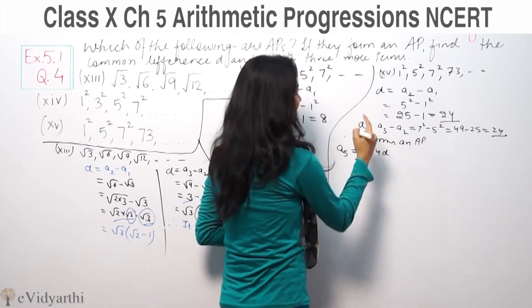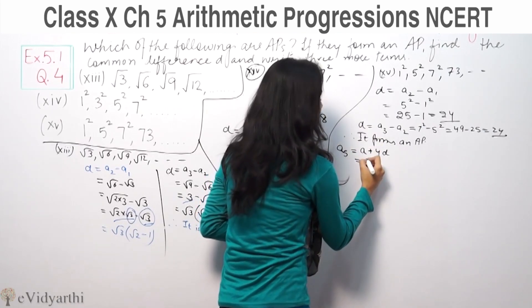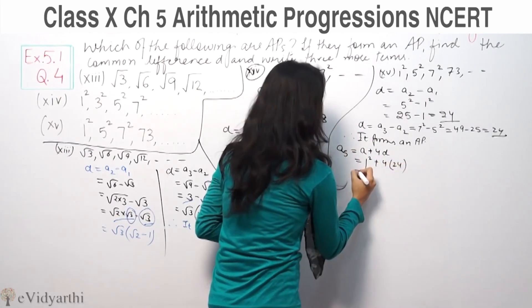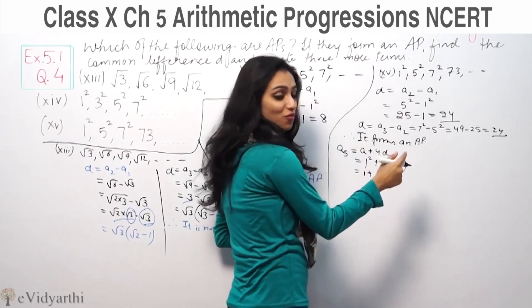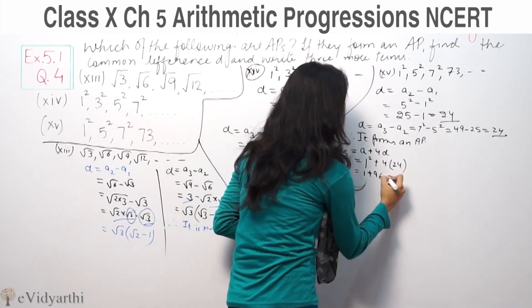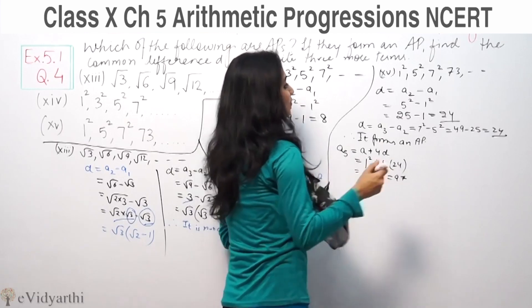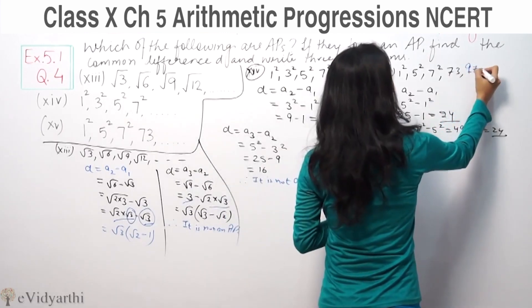First term is 1 square, 4D means 4 times 24. So 1 plus 24 into 4 equals 1 plus 96, which equals 97. So the next term is 97.